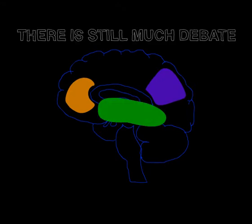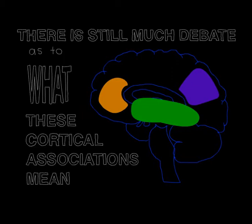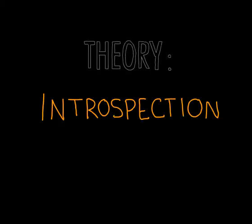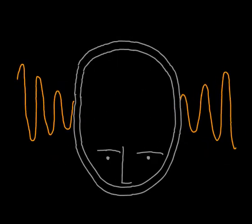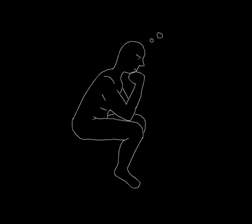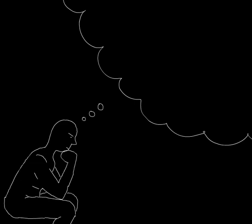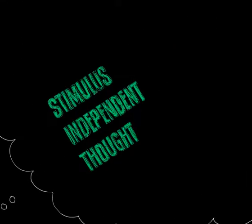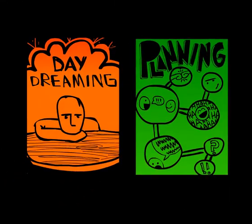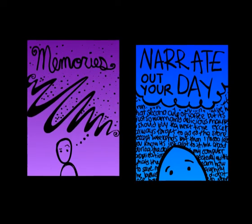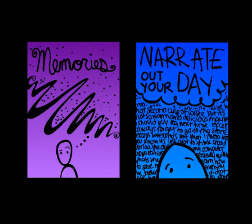There is still much debate as to what these cortical associations mean, if anything at all. One theory implicates them in introspection and mind wandering — essentially our stream of consciousness. This includes any thoughts not directly associated with the immediate external environment. Much of our waking hours are composed of stimulus-independent thought, whether it be daydreaming, planning out our future actions, revisiting memories, or just listening to yourself narrate out your day.